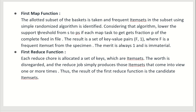In the first reduce function, each reduce task is assigned a set of keys which are item sets. Those keys that appear one or more times are grouped together — those that are frequent in some subset are retained. Each reduce core is allocated a set of keys which are item sets; the value is disregarded and the reduce job simply produces those item sets that appear one or more times. The result of the first reduce function is the candidate item sets.